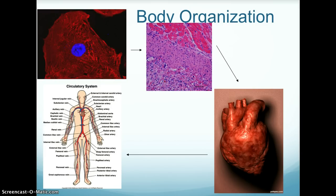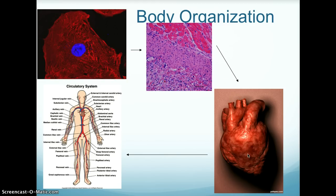This image shows body organization from smallest to largest, starting with a heart cell, then heart tissue, then the heart as an organ, and the heart as part of an organ system.